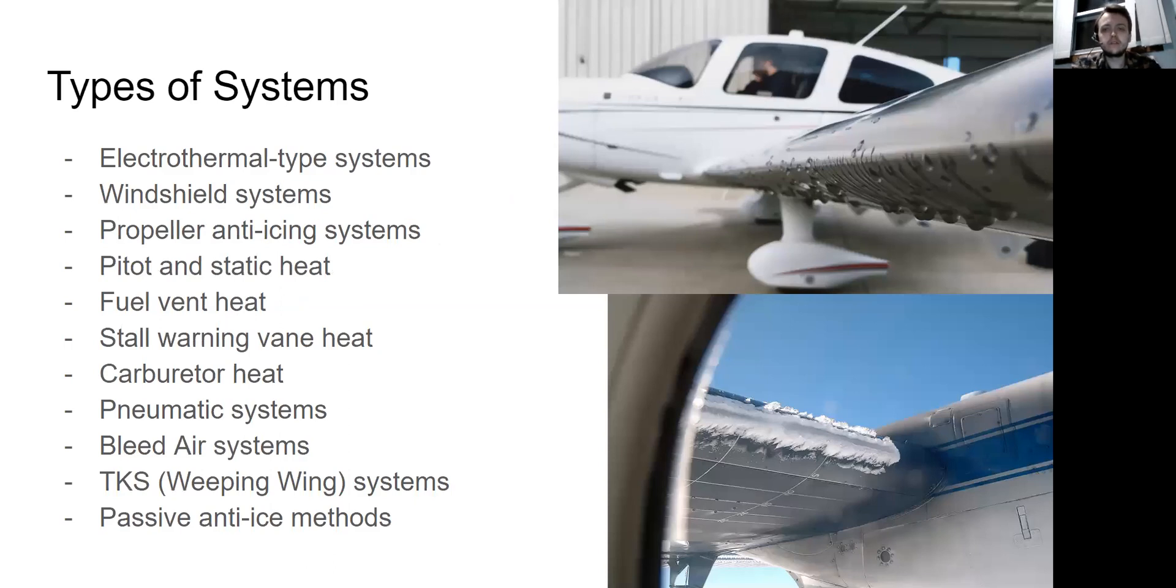So these are all the systems, the types of systems that you can find in an aircraft to prevent ice buildup. The systems are electrothermal type systems, windshield systems which are electrothermal systems mainly, and also TKS or weeping wing type systems. Propeller anti-icing systems, pitot and static tube heat, fuel vent heat, stall warning vane heat, carburetor heat, pneumatic systems, bleed air systems, TKS or weeping wing systems, and then passive air anti-ice methods.